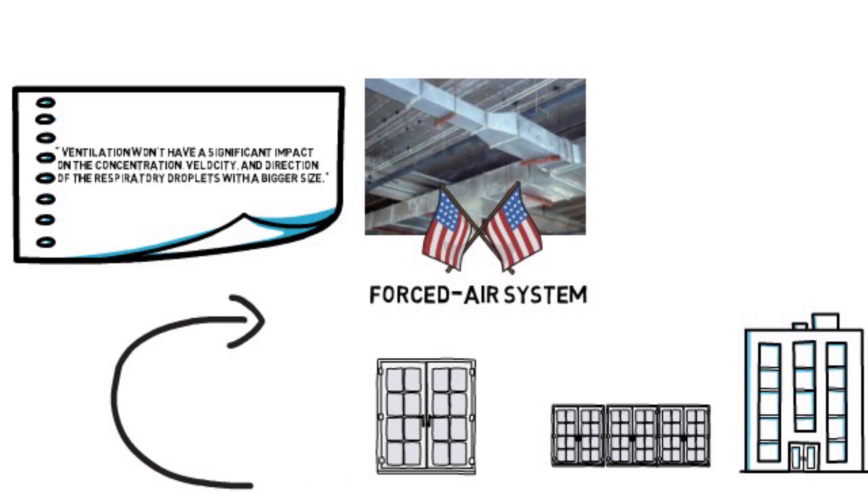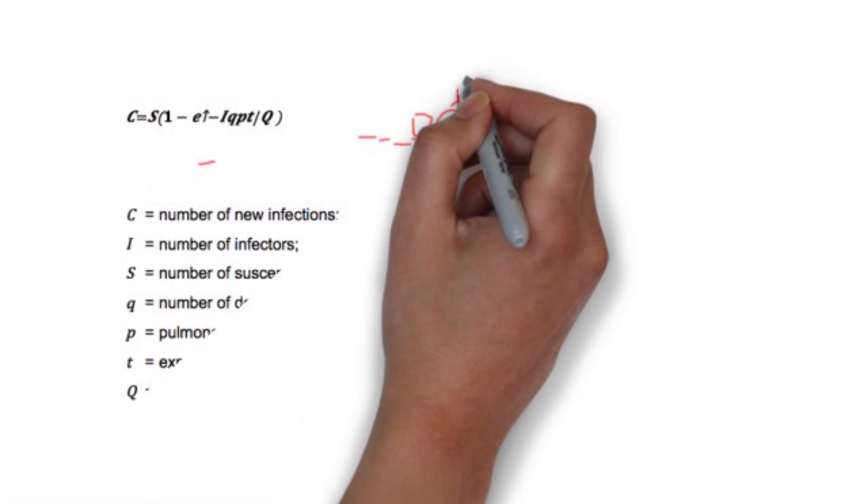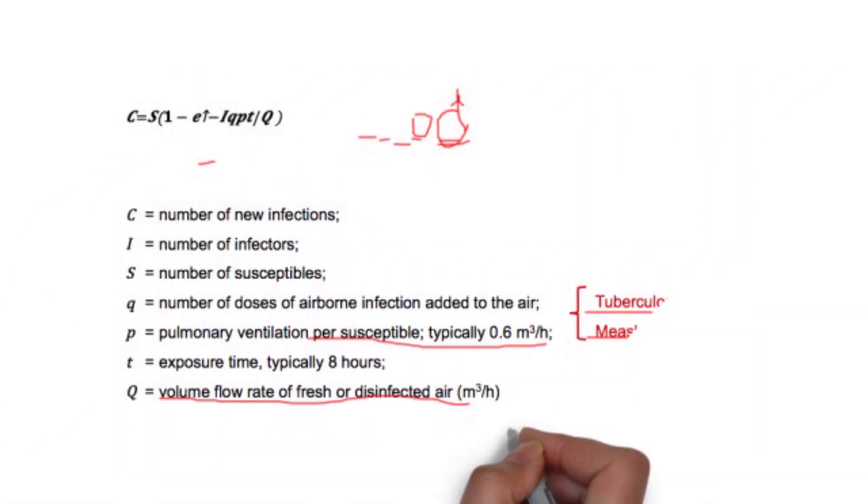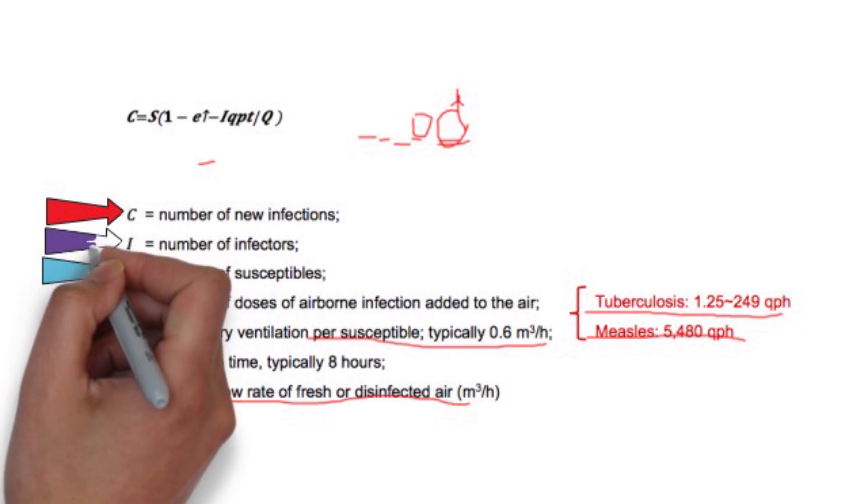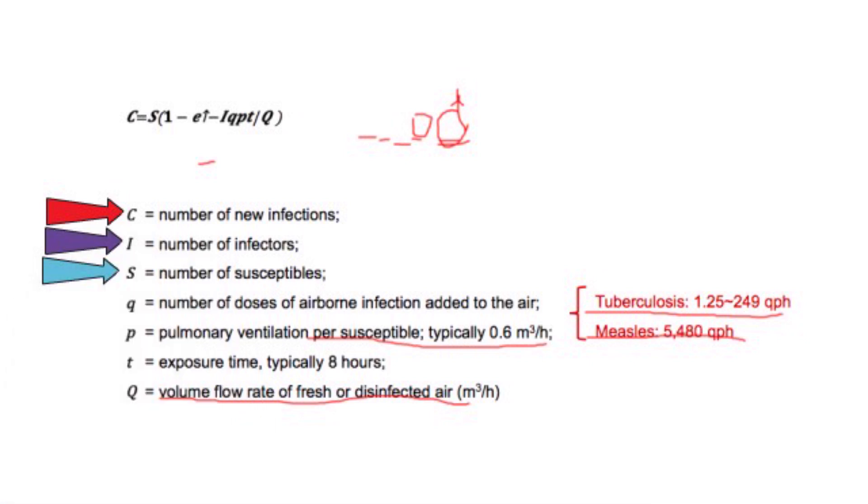Let's look at the mathematical model of airborne infection. The equation looks complicated, but it really isn't. C is the number of new infections in an outbreak. It is proportional to S, the number of susceptibles. Other factors include the number of infectors, I, and the number of doses of airborne infection added to the air per infector, Q.